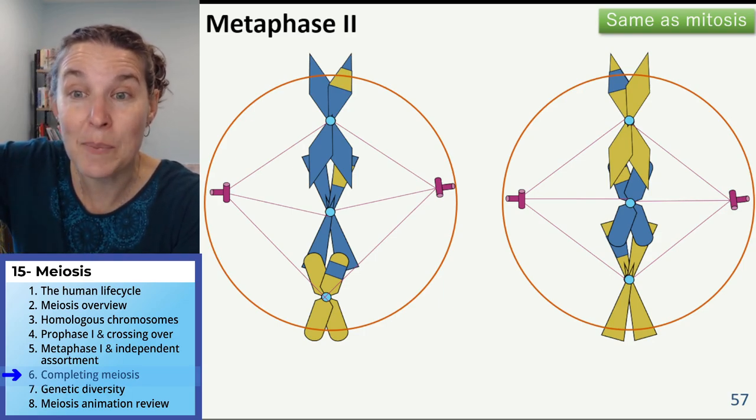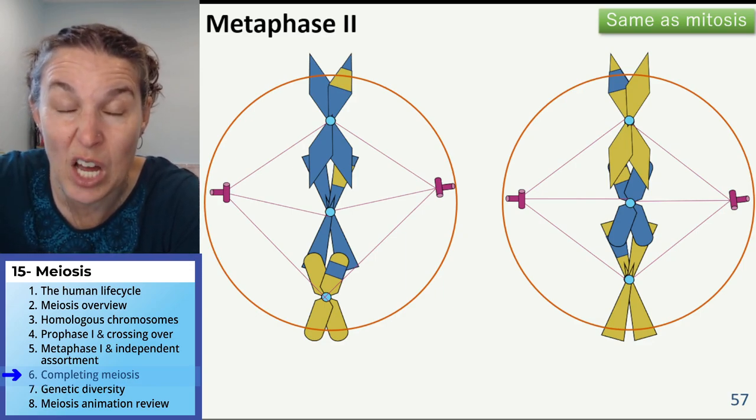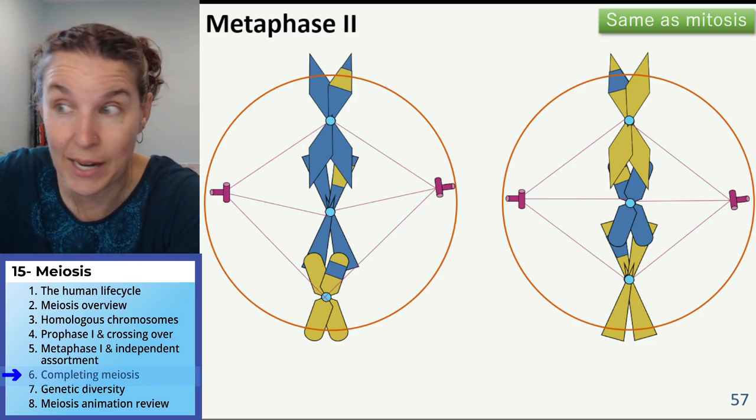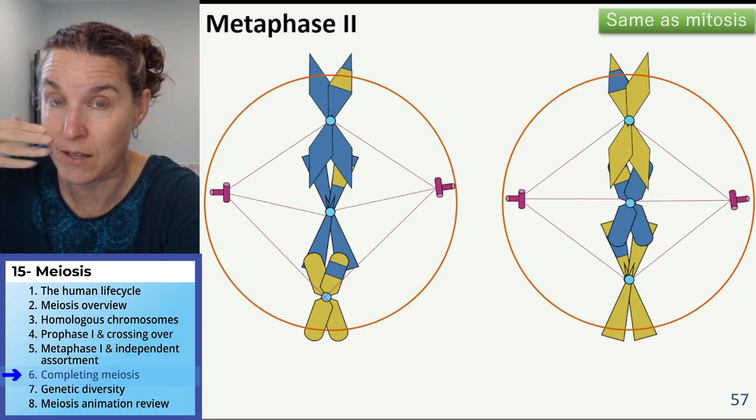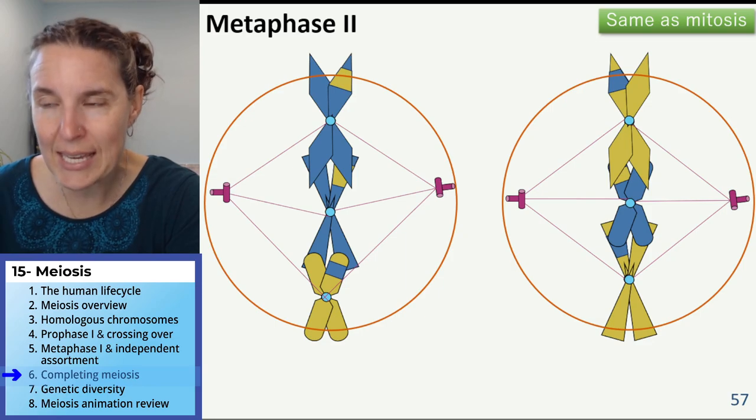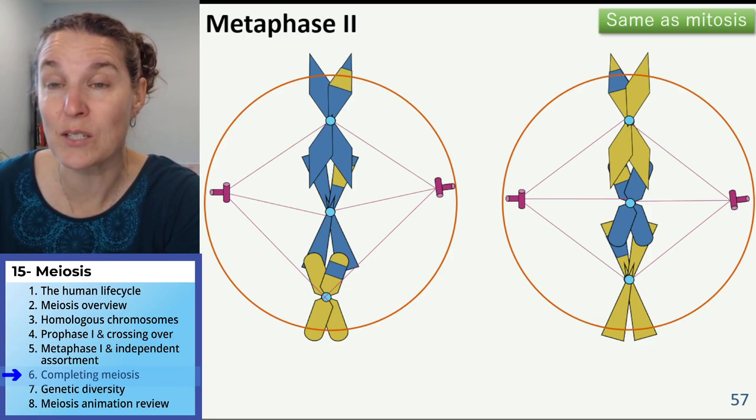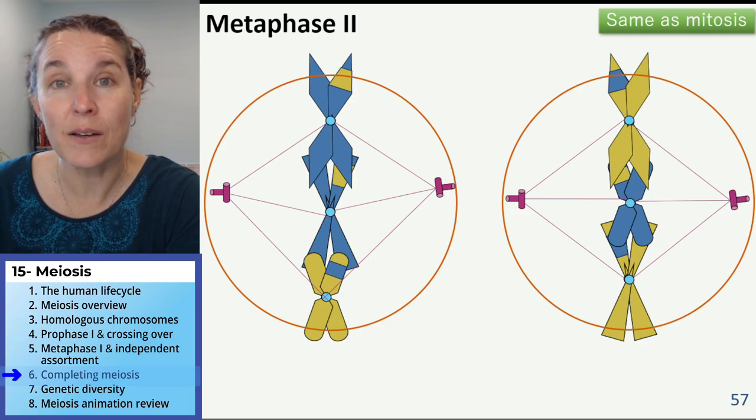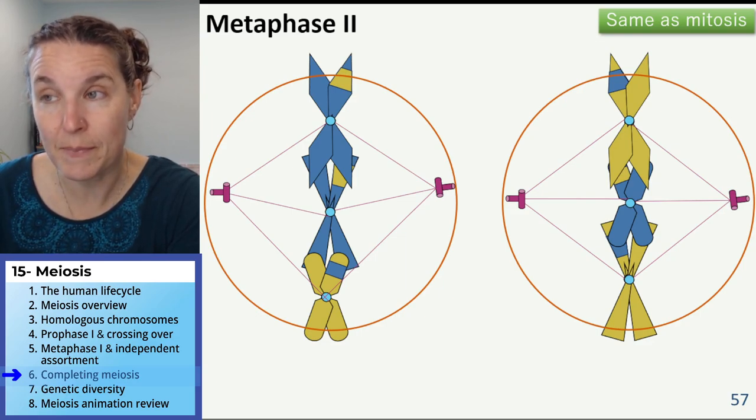Homologues line up independently. Well, in this case, we don't have homologues in the cell anymore, right? Because they're in the next cell. They got separated. Poor guys. In metaphase, this looks just like mitosis with half the chromosomes. Metaphase two.